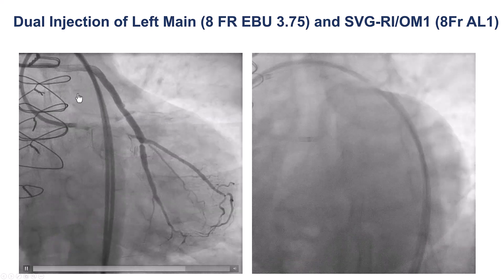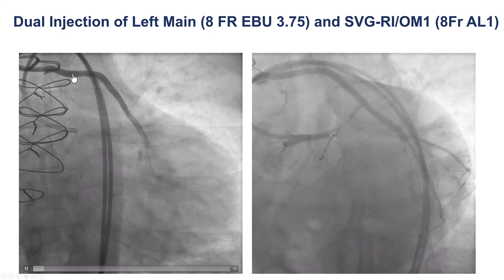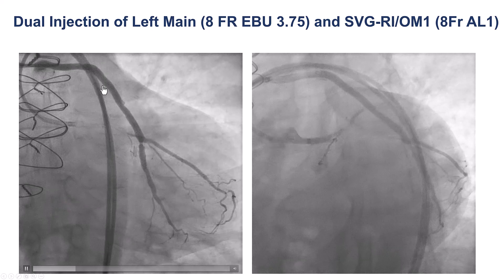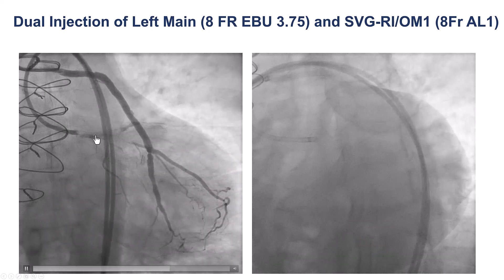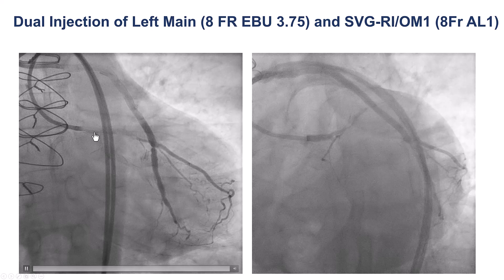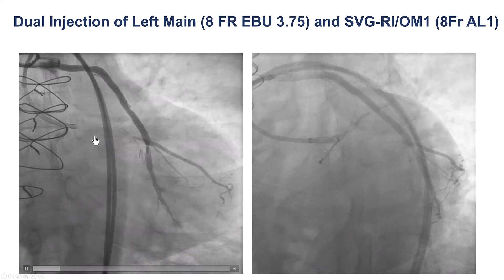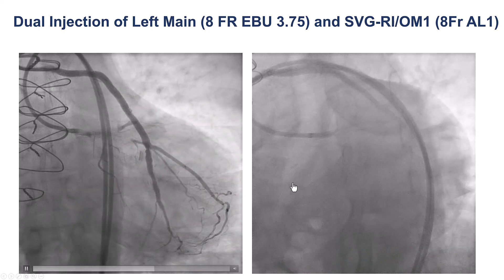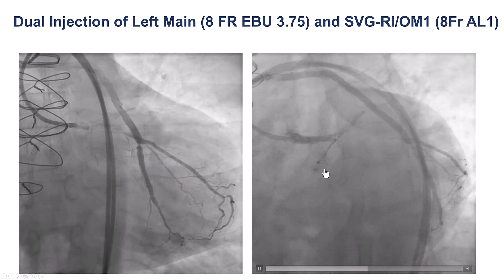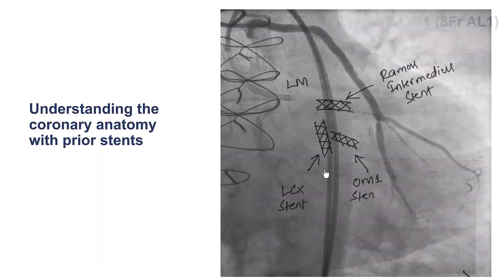This is the dual injection illustrating the anatomy. The vein graft is going to the RAMUS and OM1. We have a CTO in the proximal circumflex with previous stents there, and previous stents into the RAMUS branch as well. So, two CTO lesions and multiple previous stents in the RAMUS, circumflex, and first obtuse marginal branch.